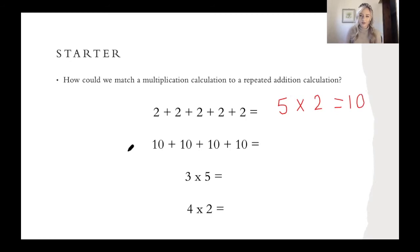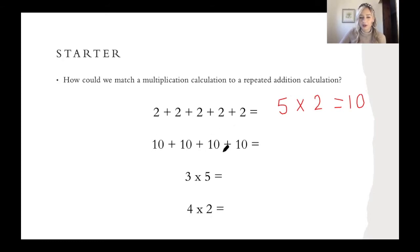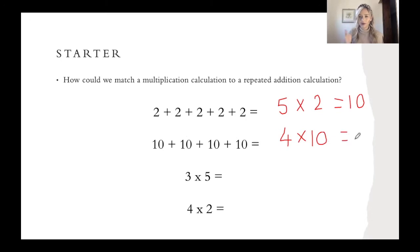Pause the video to have a go at the rest of these questions. Well done for having a go at these. I'm going to finish off and write these answers up so that you can mark your work. So to write the multiplication calculation for this question, let's see how many groups I have: one, two, three, four groups, and in each of my groups I have ten. I know that I can count up in my ten times table four times to work this out: ten, twenty, thirty, forty. I have four tens, so my answer is 40.